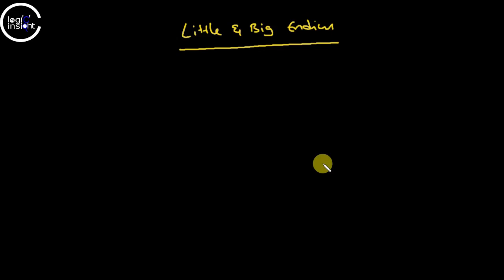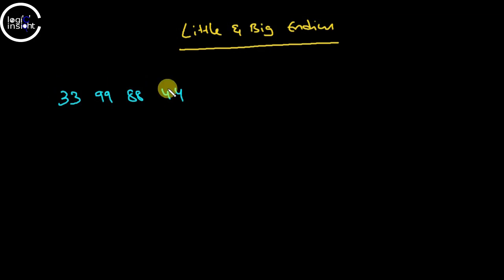In this presentation we shall learn about little-endian and big-endian concepts, and we'll see how we can tell if a machine is little-endian or big-endian. Before going further we should know what little-endian and big-endian mean. For example, if I have a number whose value is represented in hexadecimal, in memory there are two possibilities.